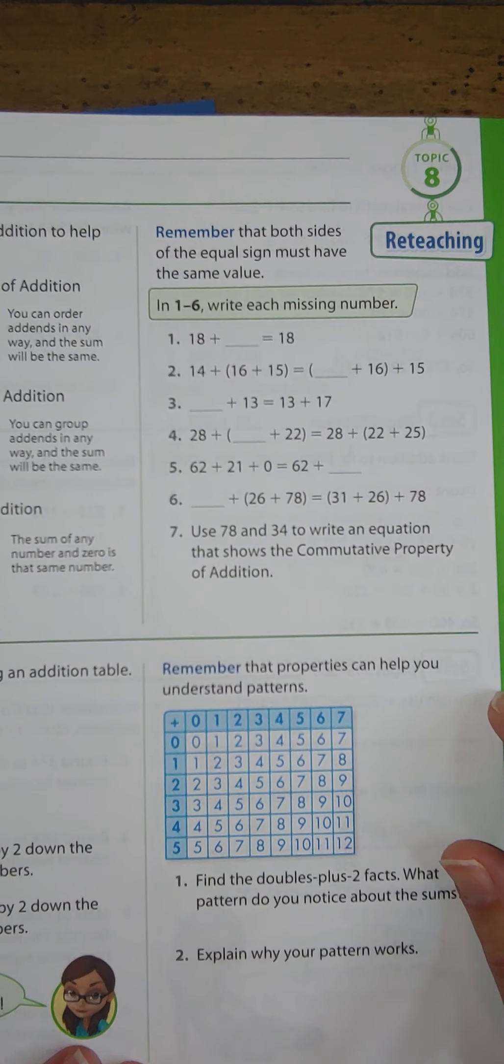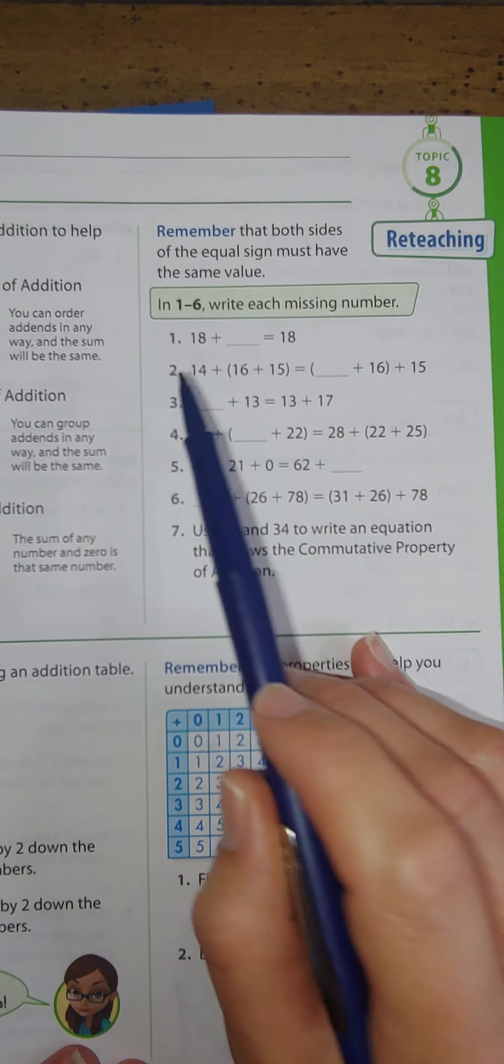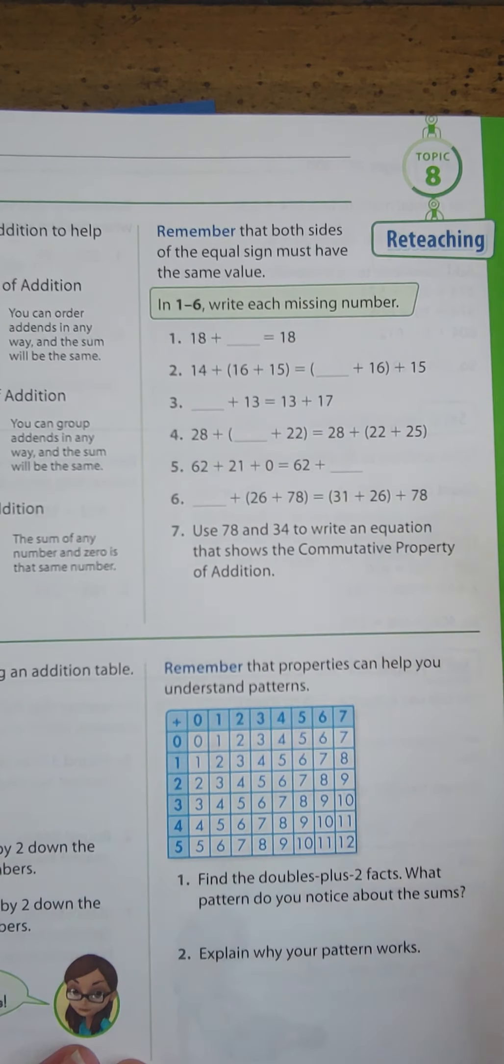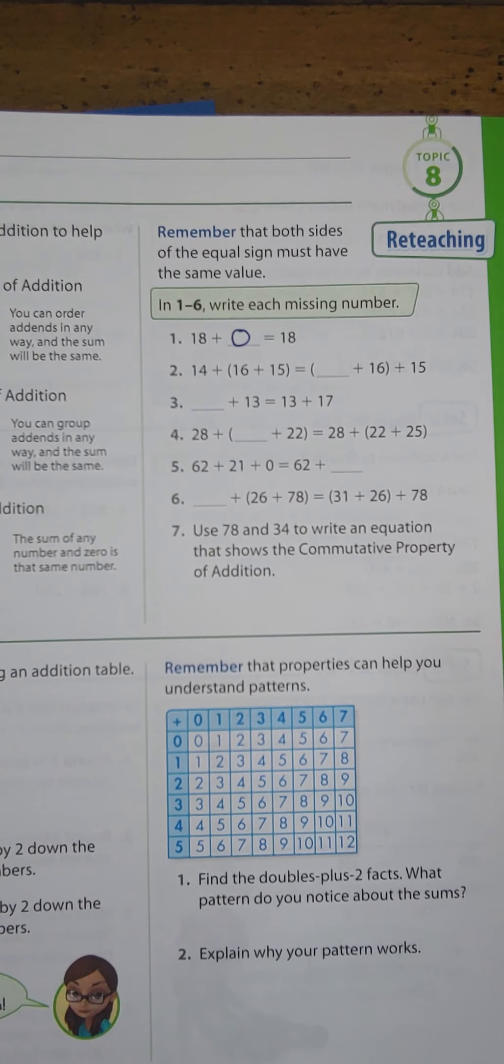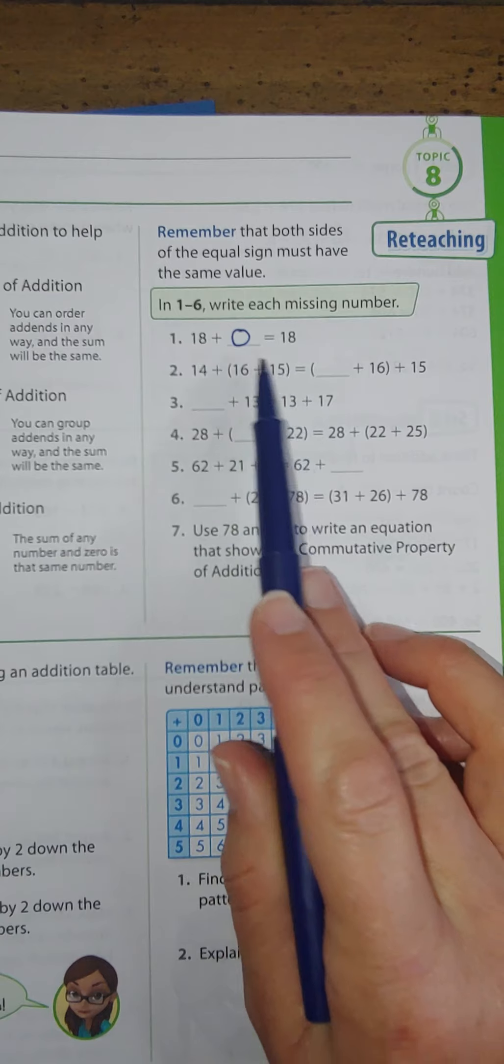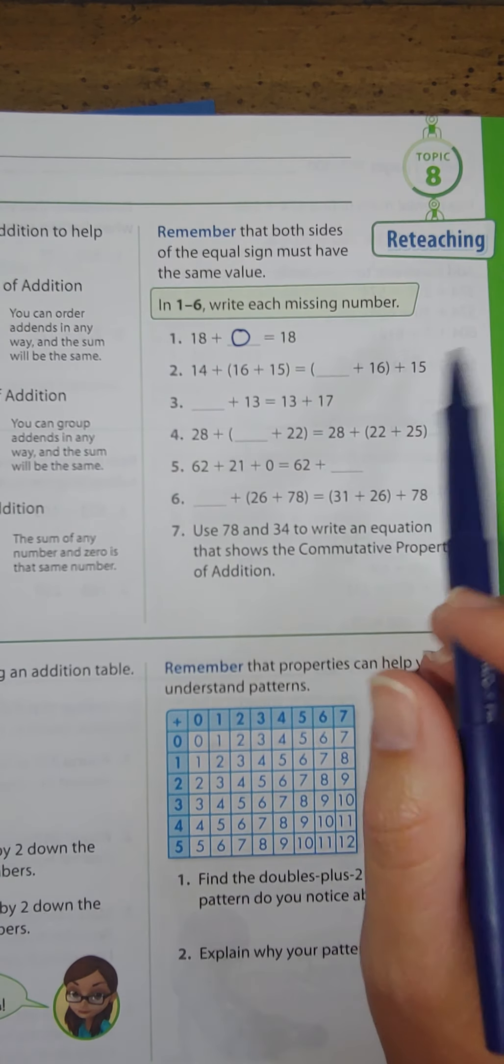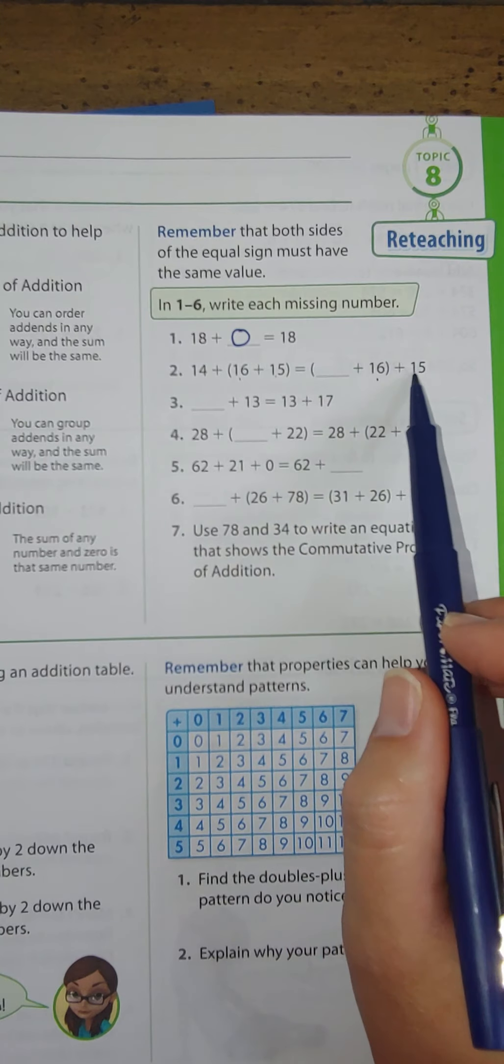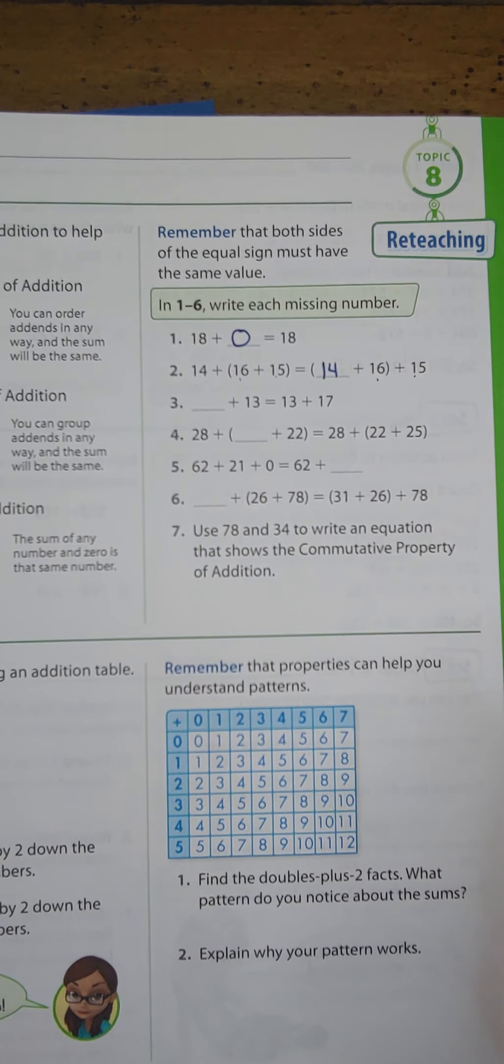For this activity, it says to write each missing number. When I notice I see 18 plus something equals 18, I know that has to be zero because it's the same answer or sum. For 14 plus 16 plus 15 in parentheses, I see the 16 and the 15, but now I'm missing the 14. So they changed the grouping or they're using the associative property.